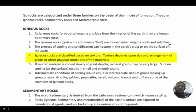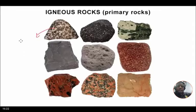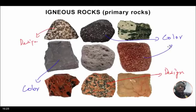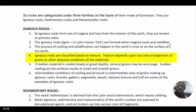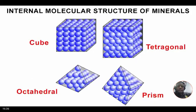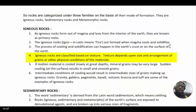Texture depends upon the size and arrangement of grains or other physical conditions of the materials. If molten material is cooled slowly at greater depths, mineral grains may be very large; sudden cooling at the surface results in small and smooth grains. When magma cools under the crust it does not get exposed to external weathering agents like wind, river, and ice — because of that the mineral grains do not break and remain intact under the enormous pressure and temperature found at depth.